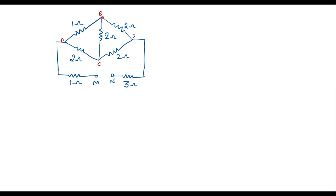Similarly, the resistors 2 ohm, 2 ohm, 2 ohm — that is nodes B, D, C, B — are connected in delta fashion. We will try to convert either the A-B-C-A delta or the B-D-C-B delta into star. Here all the resistor values are the same, so I will convert this delta into star.